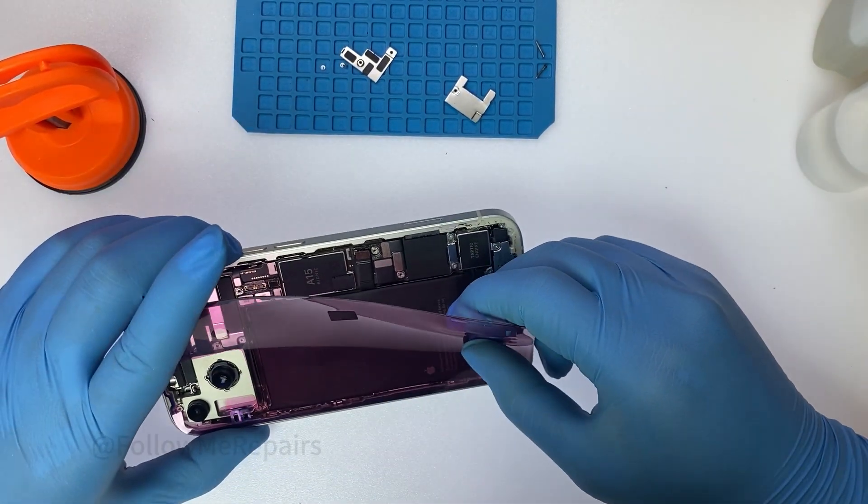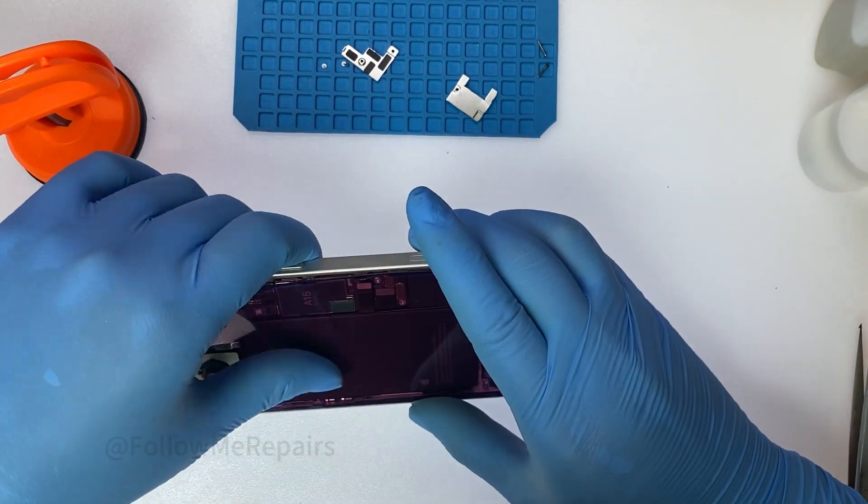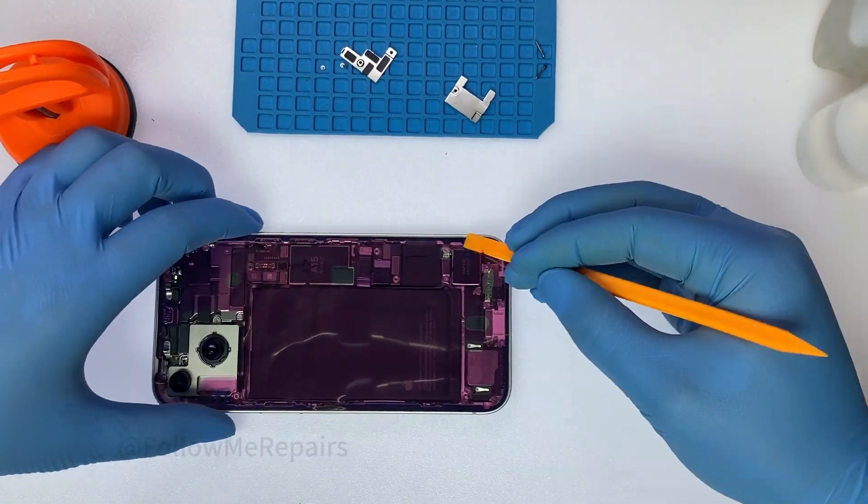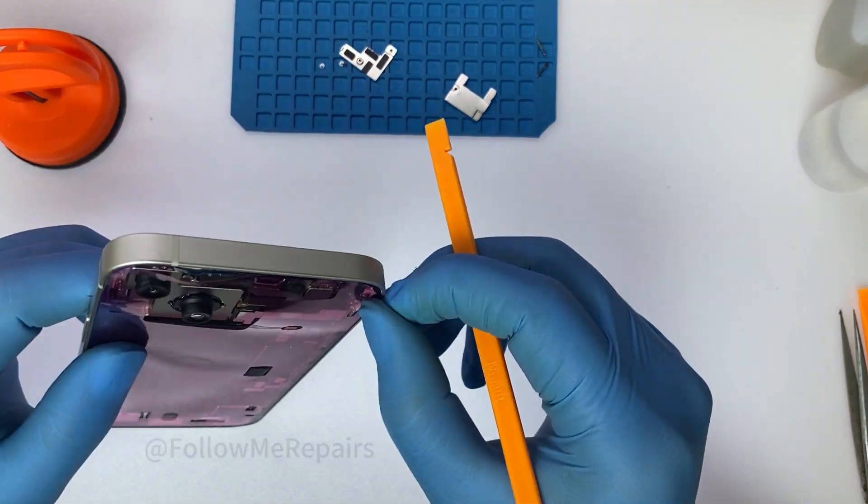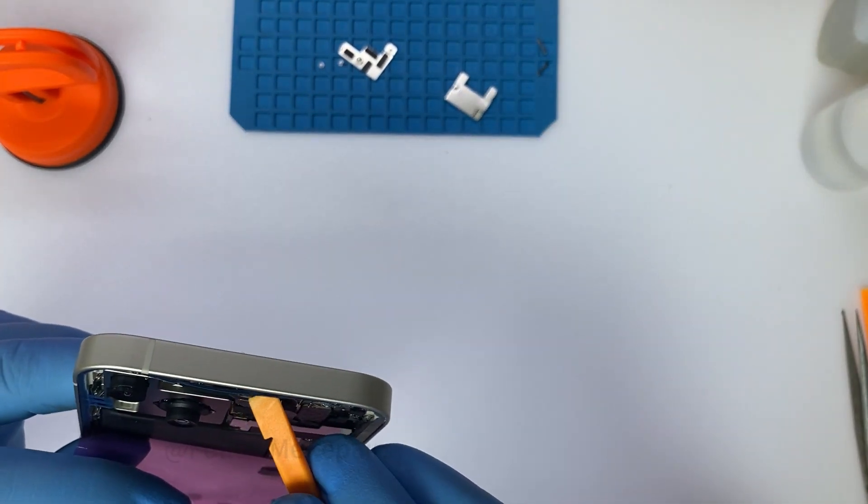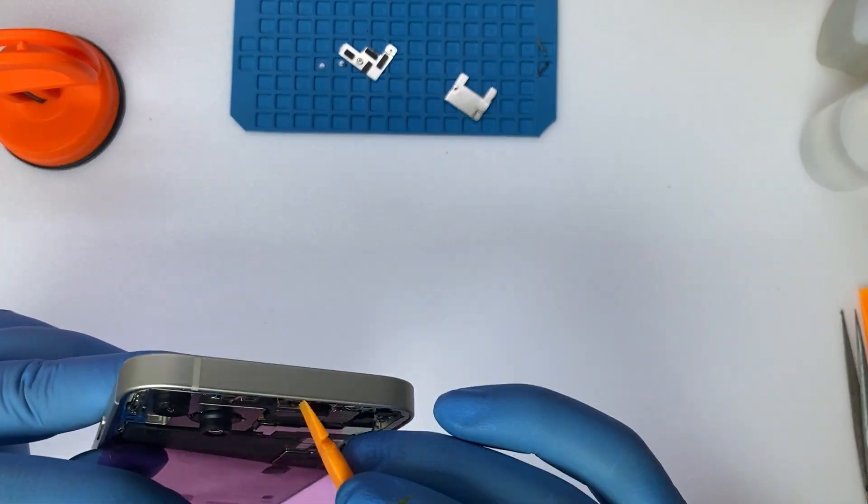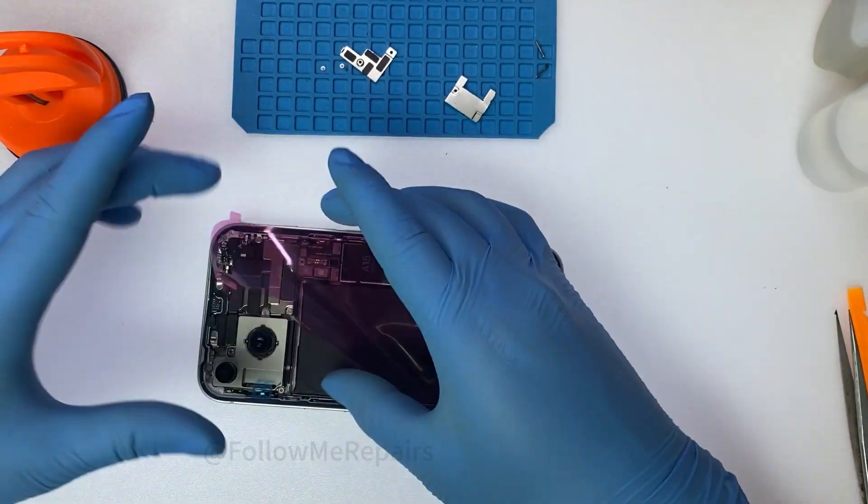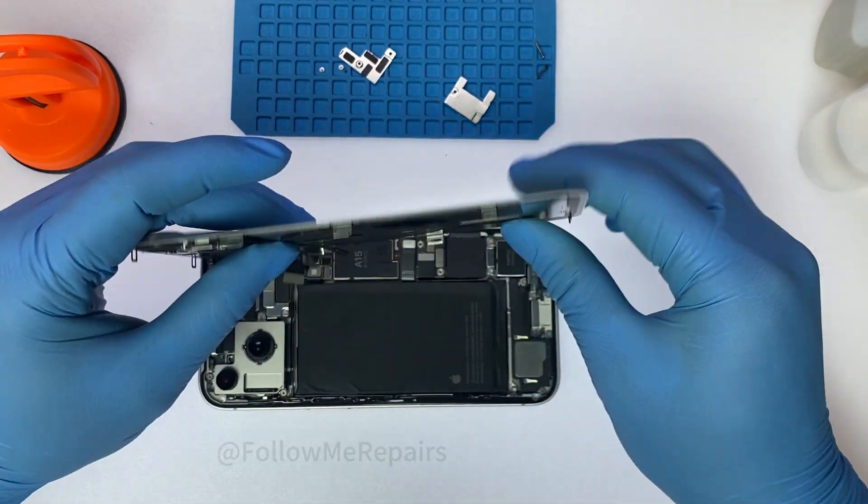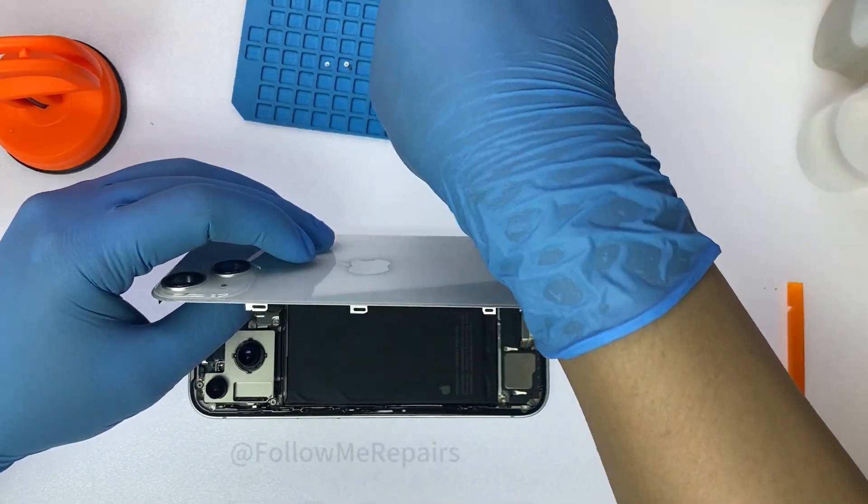Apply waterproof tape seal on the phone back cover. Install the back glass panel onto the phone.